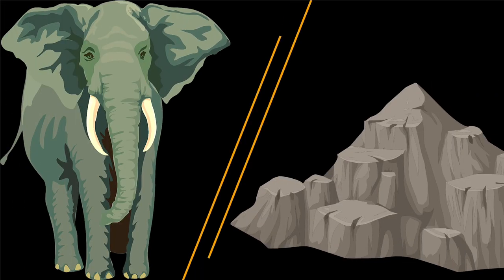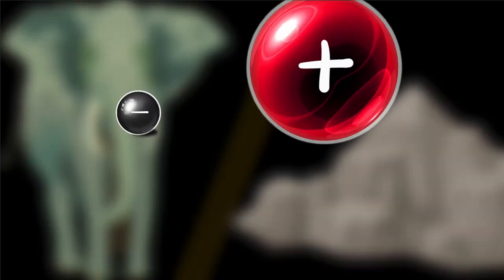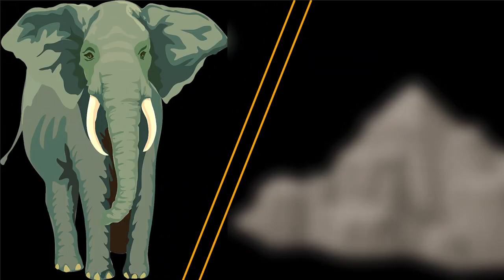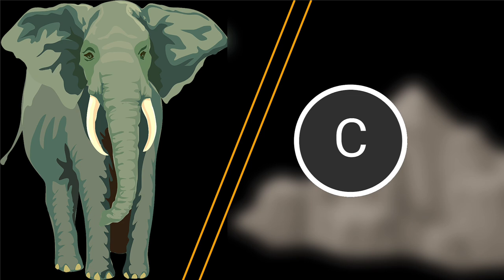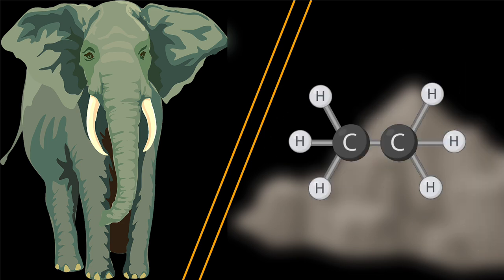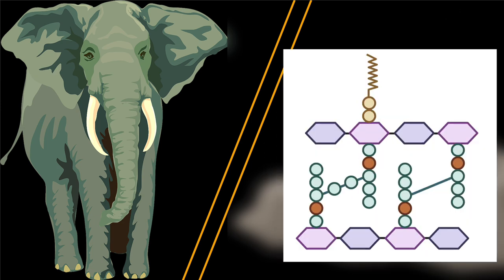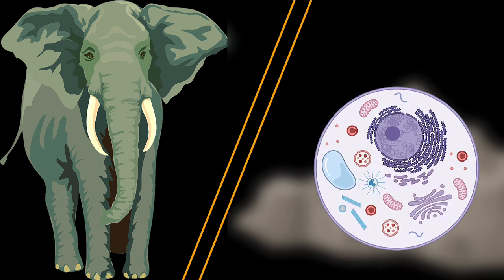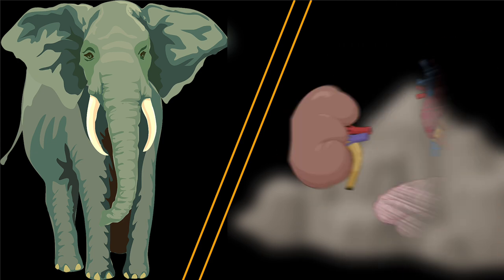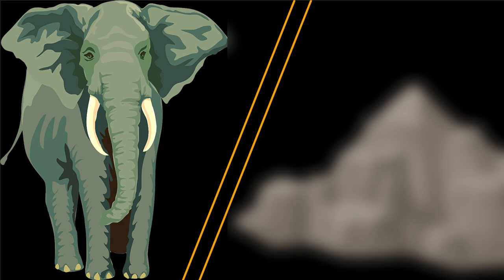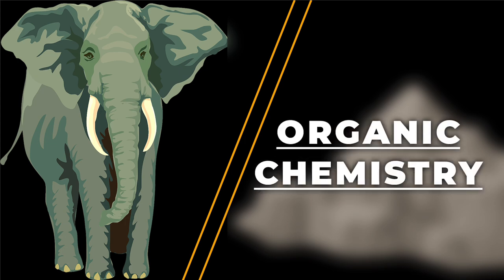Living things and dead things are fundamentally made of the same stuff — electrons, protons and neutrons. But then what makes living things living? Carbon. Carbon and its ability to create an insane amount of different molecules, which gives you cells, tissues, organs and eventually life itself. Welcome to organic chemistry.